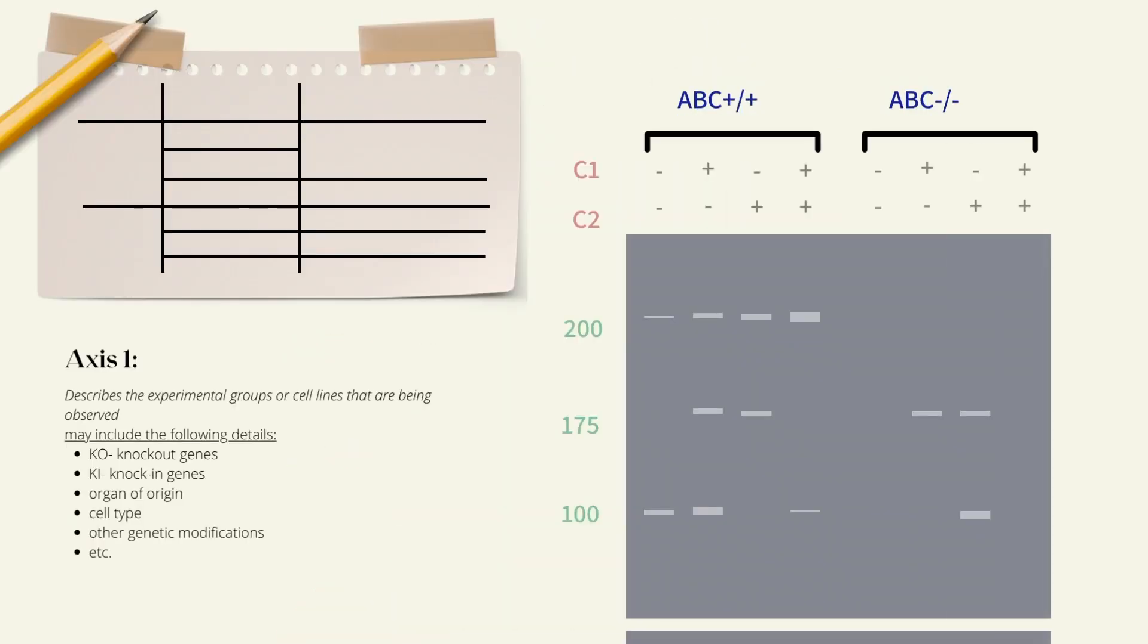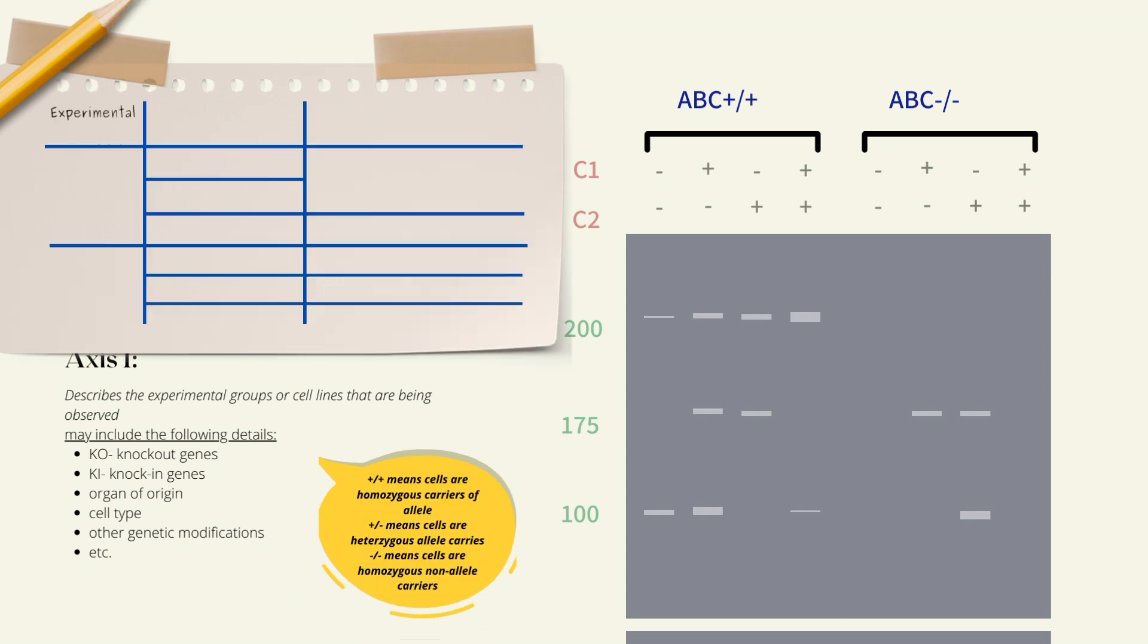Axis number one is the top horizontal axis. It tells readers what cell lines are being used and how the experimental groups are different from each other. In most cases, it will include details like genetic modifications, like gene knock-ins or gene knock-outs. Familiarize yourself with the common abbreviations like the plus sign and the minus sign and what they are referring to. Now let's add what we know to our results table. Experimental groups in this case will be the homozygous ABC gene-carrying cells versus the homozygous non-ABC-carrying cells.